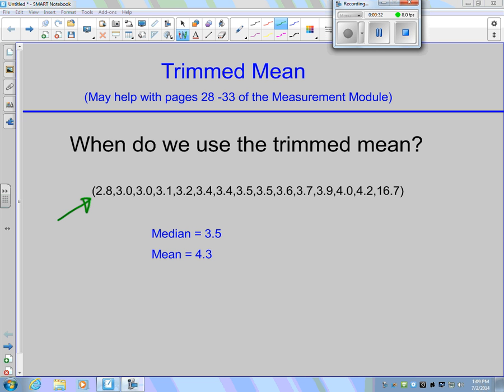If you look at where the majority of those numbers lie, you'll see that the median is actually a better measure of central tendency. It's more accurate than the mean. The mean is heavily influenced by this outlier, the 16.7, which is way out of whack relative to all the other numbers. When you have an outlier in your data set that can heavily influence your mean, that's when you want to use a trimmed mean.